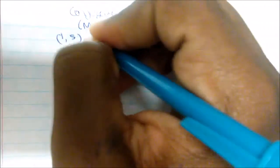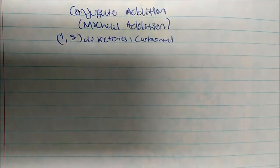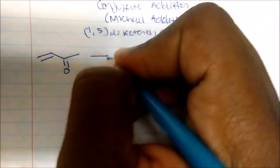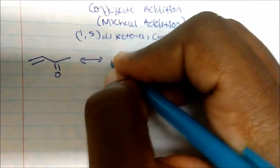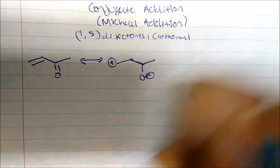In this video we're going to talk about conjugate addition or Michael addition. We produce 1,5-diketones with it, or you could say 1,5-dicarbonyls. We'll take a conjugated ketone or conjugated carbonyl. This is in resonance form with a positive charge on carbon and a negative charge on the oxygen, so these two are in equilibrium.